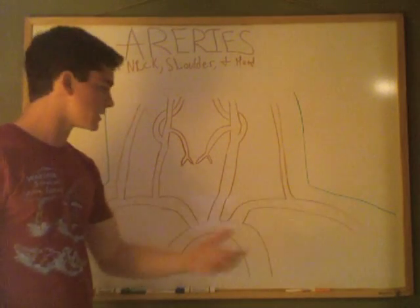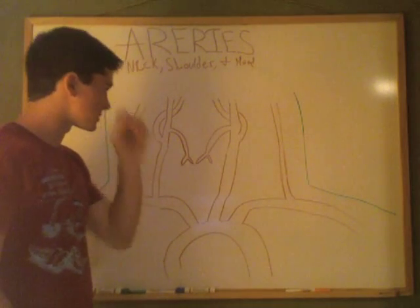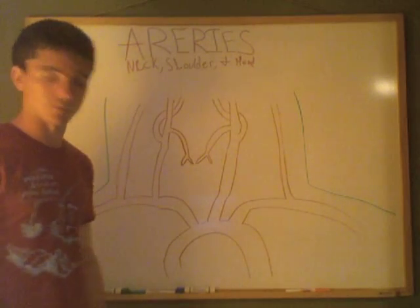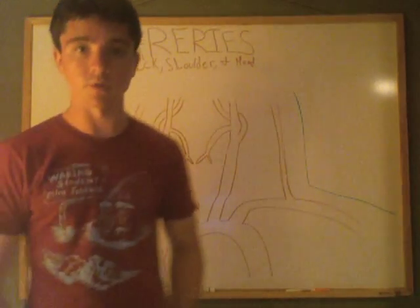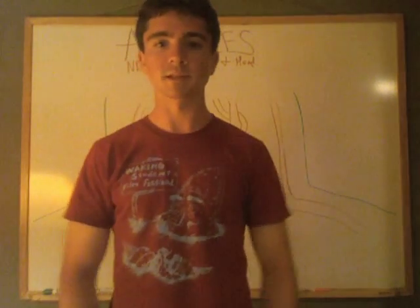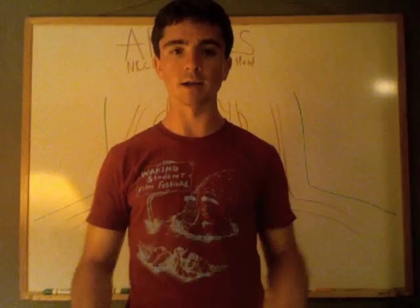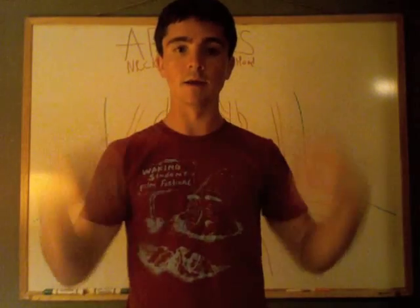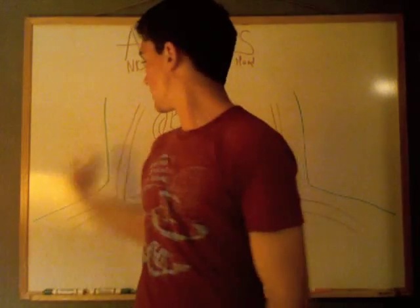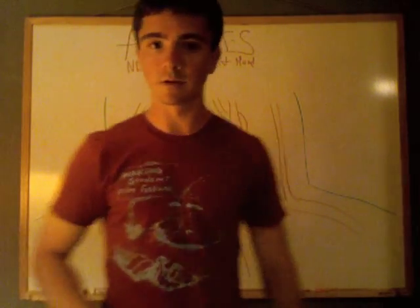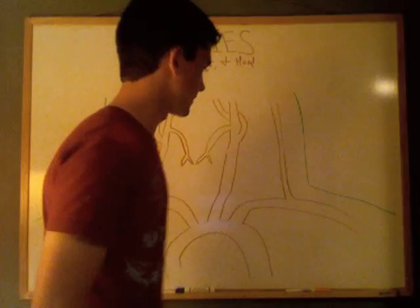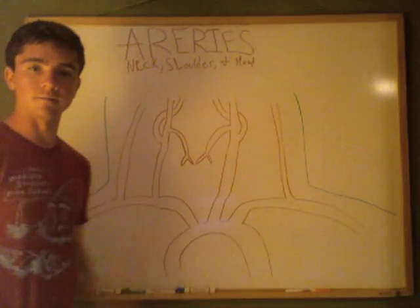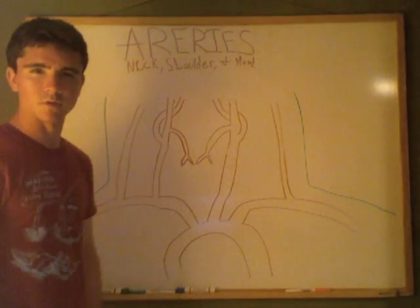Let's begin by just understanding what we're looking at right here. This is just a person standing like this. Those green lines are the neck and then the shoulder. You can tell based off the color — I know the color isn't great, but you'll figure it out.